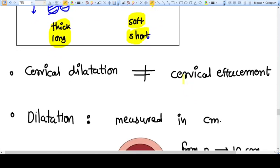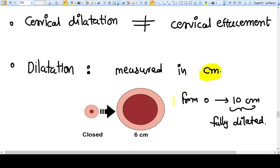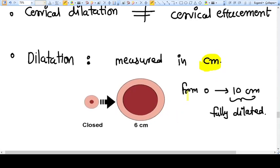Dilatation means it is measured in centimeters, and that means simply the distance between upper and lower lips. So it can be from 0 to 10 centimeters when fully dilated.